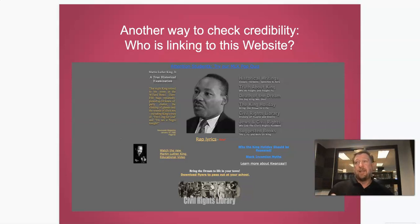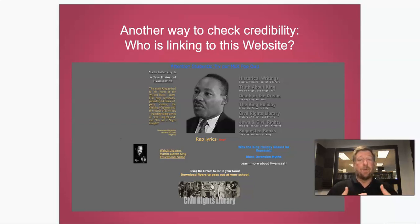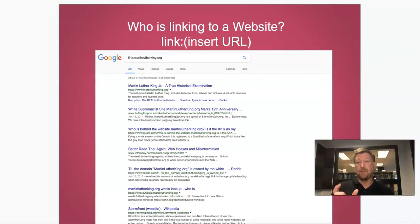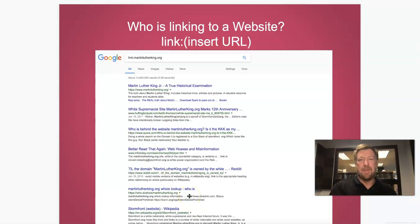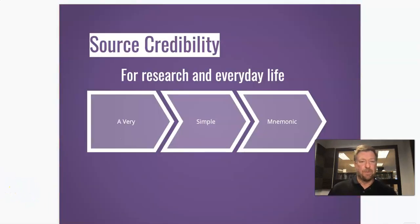There are other ways to investigate a source. Let's say the WHOIS search doesn't yield any results, because companies can pay about $10 a month to put up a privacy wall so you won't see their personal information. Another way is the link feature: if you type 'link:' followed by the URL, you will see what other organizations are linking to it. Other groups linking to martinlutherking.org include white supremacists and hoax websites.